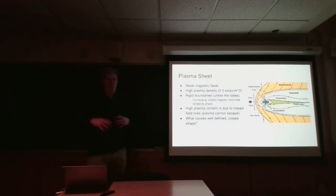And unlike the lobes, which have somewhat fluid boundaries, it has very rigid boundaries that, as you can see, converge here at the neutral point and dictate its shape. And we're going to talk about why that is the case.